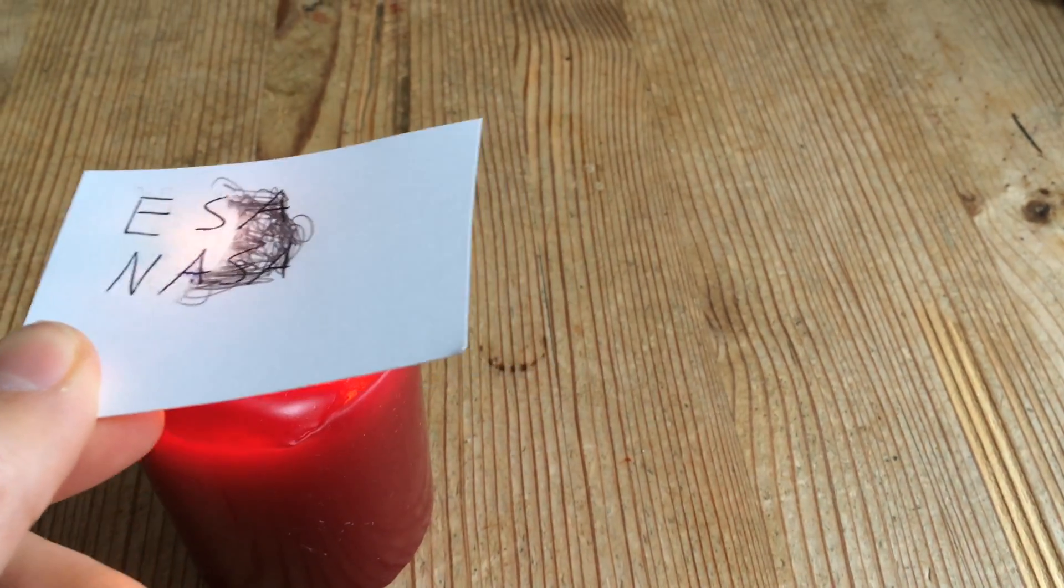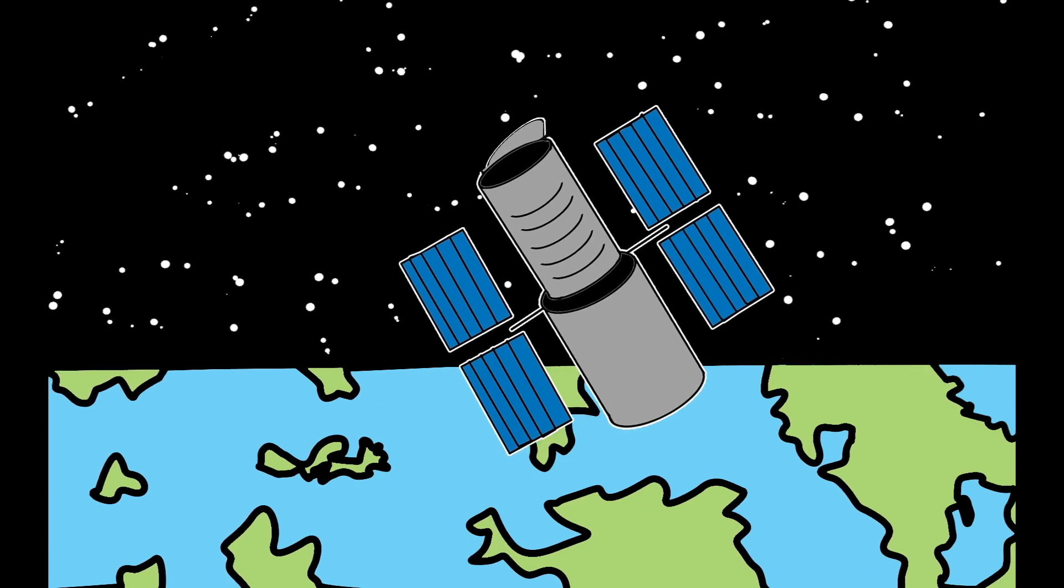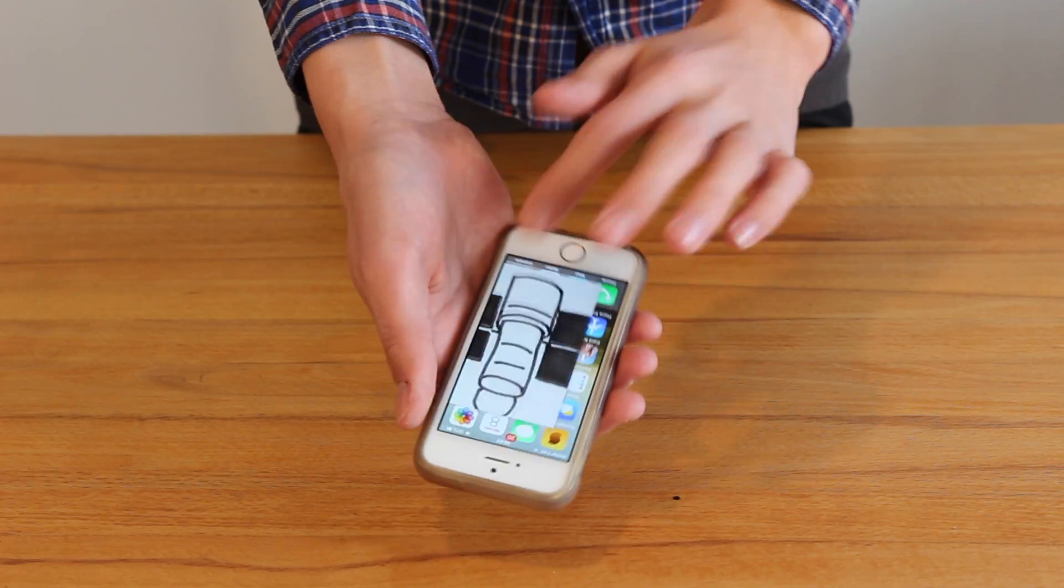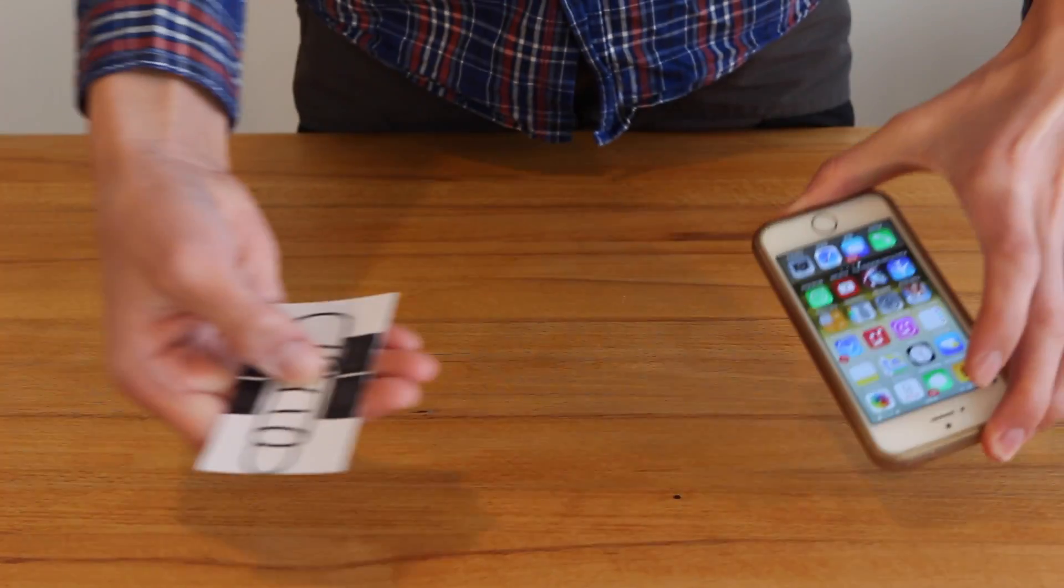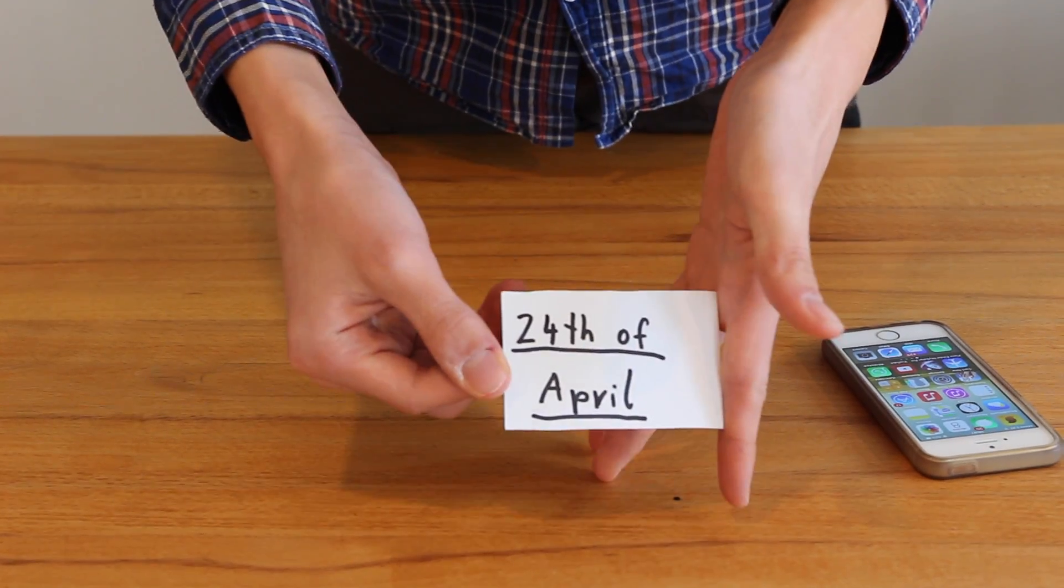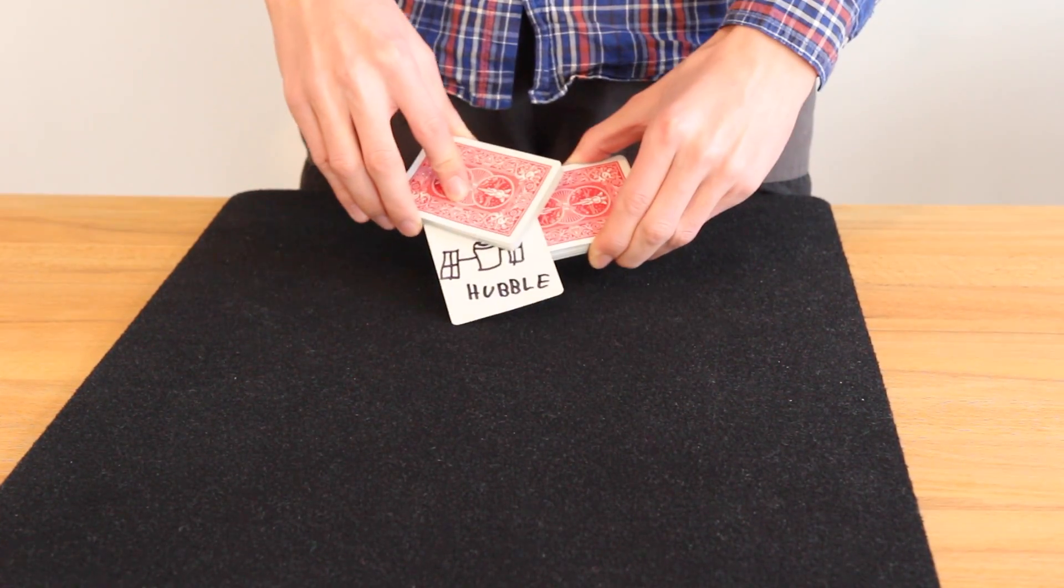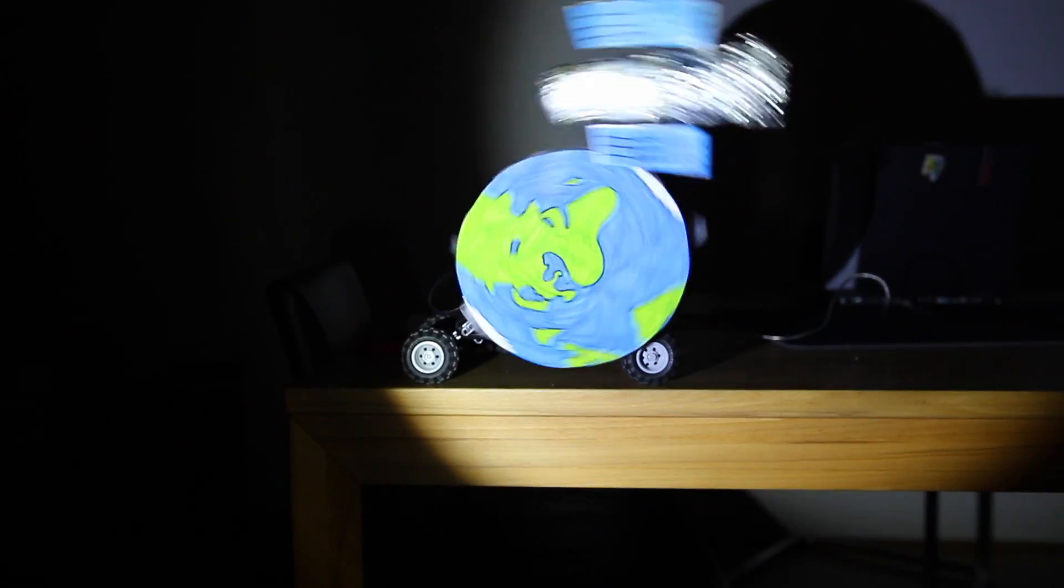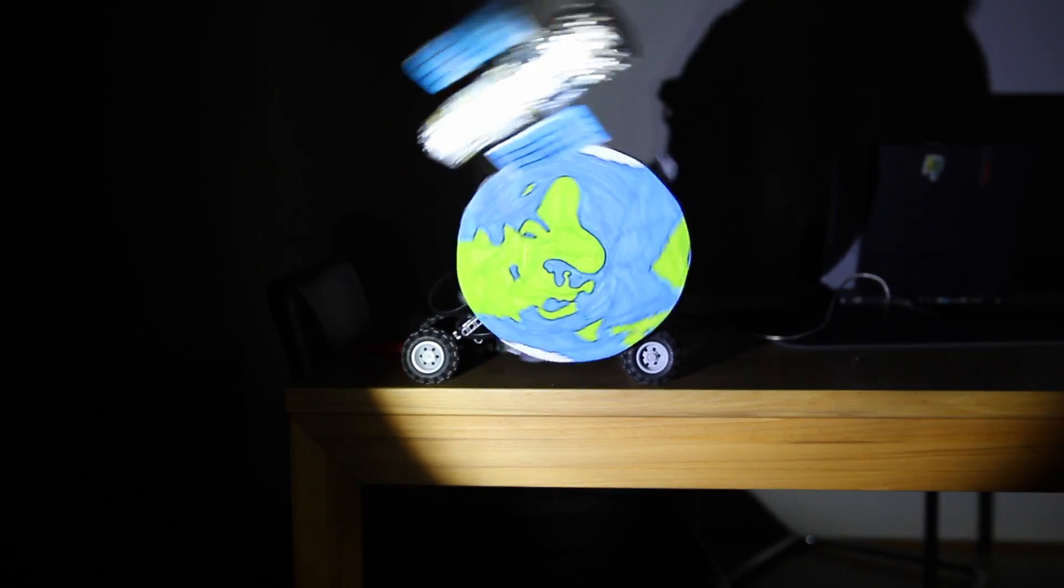Hubble is a project by ESA and NASA who had the idea of placing a telescope into orbit. They took this idea and turned it into reality. And on the 24th of April 1990, Hubble was shot into orbit. Since then, it has been circling the Earth at a speed of 28,000 kilometers per hour.